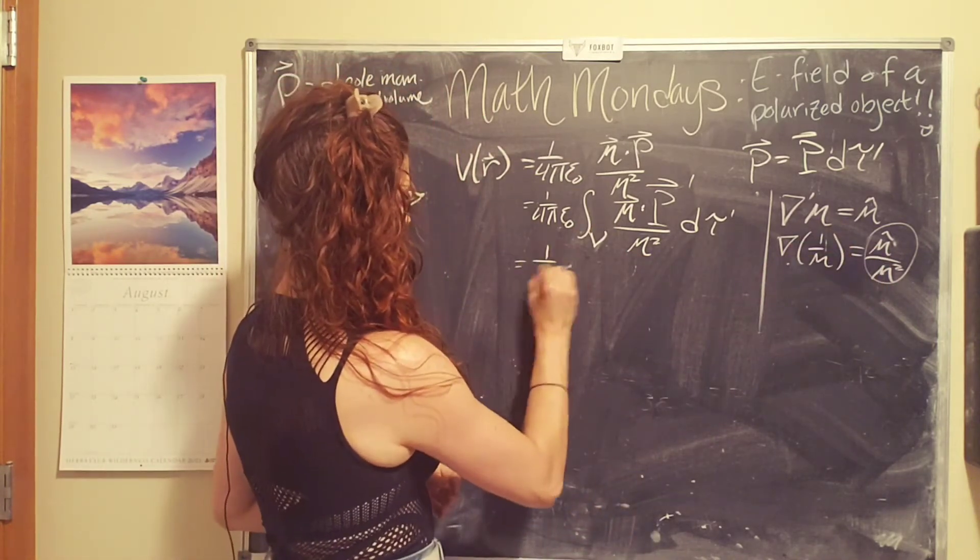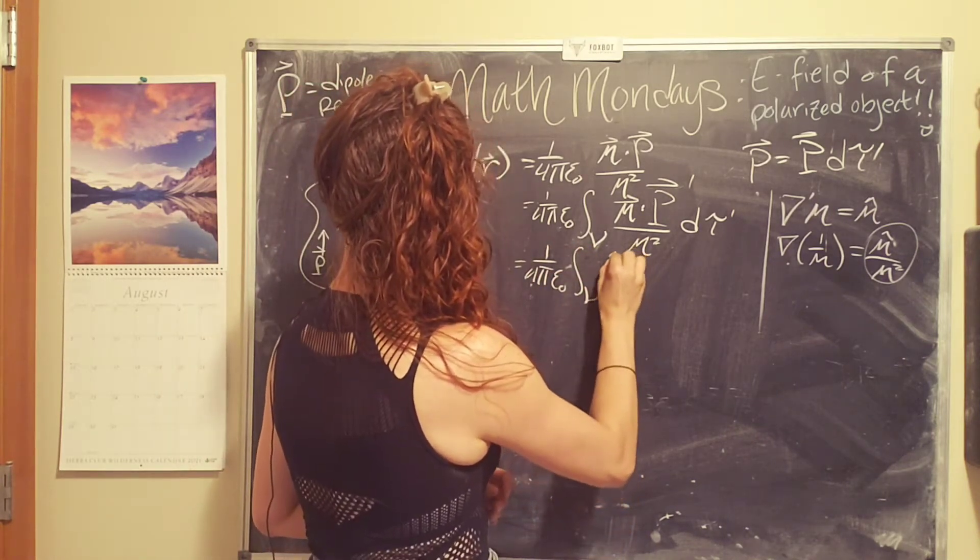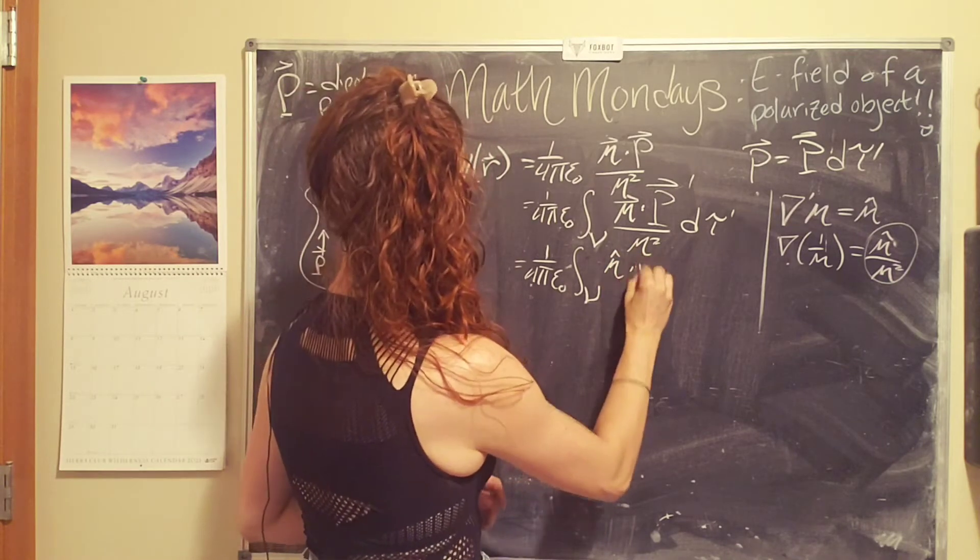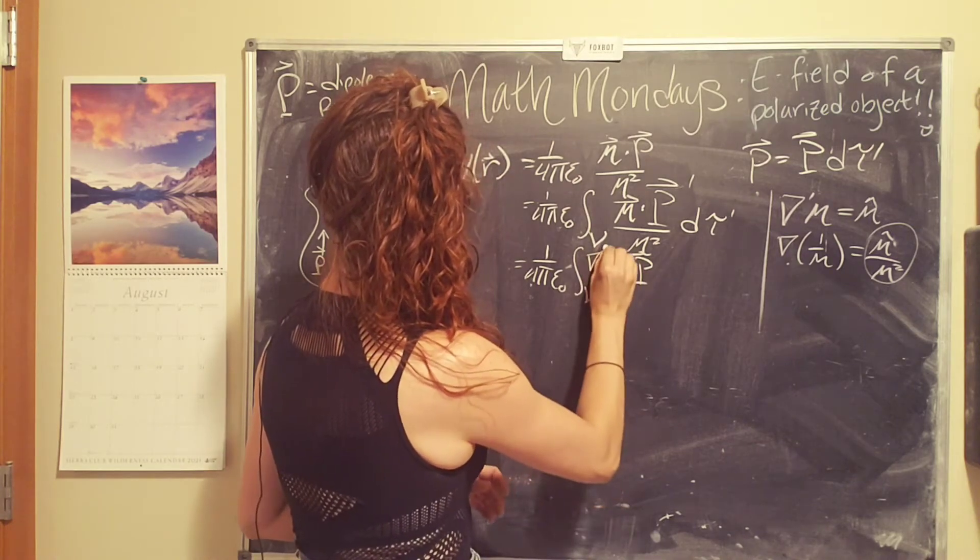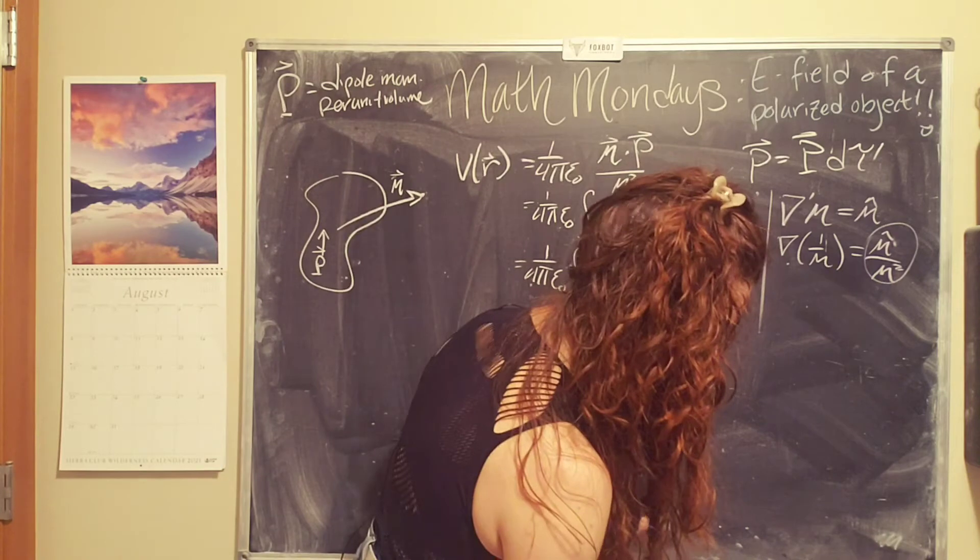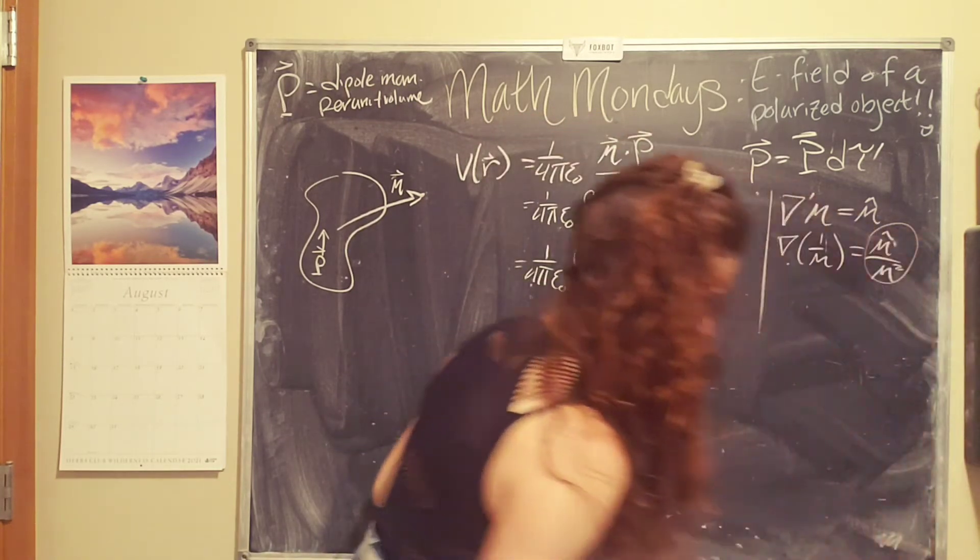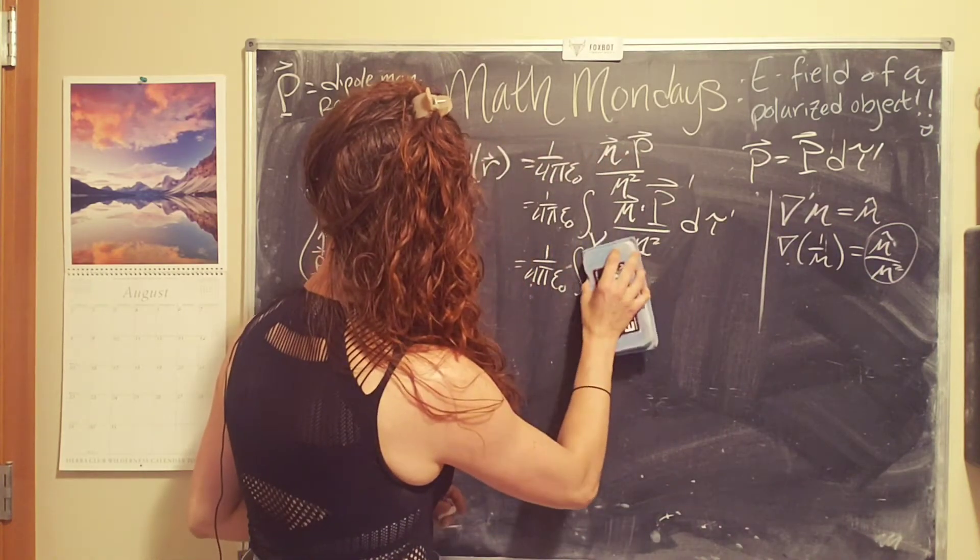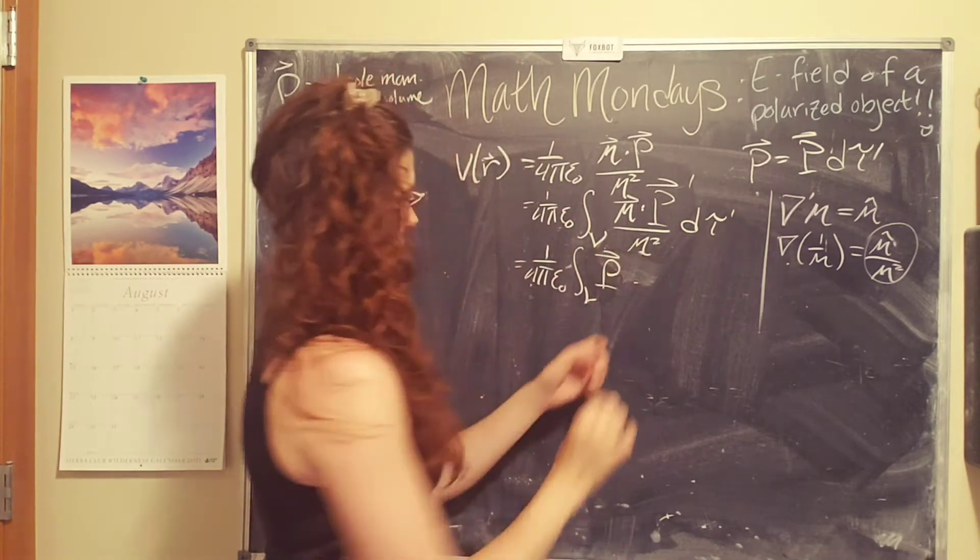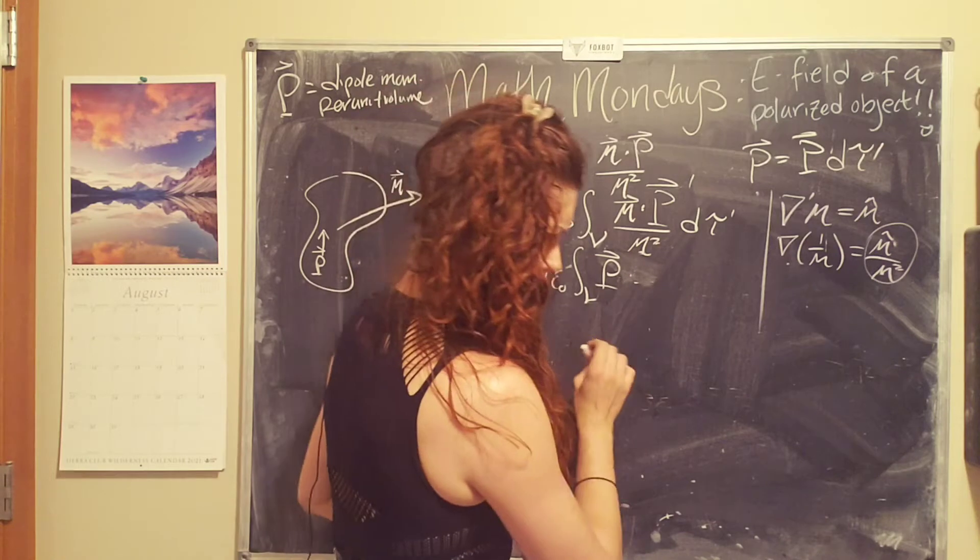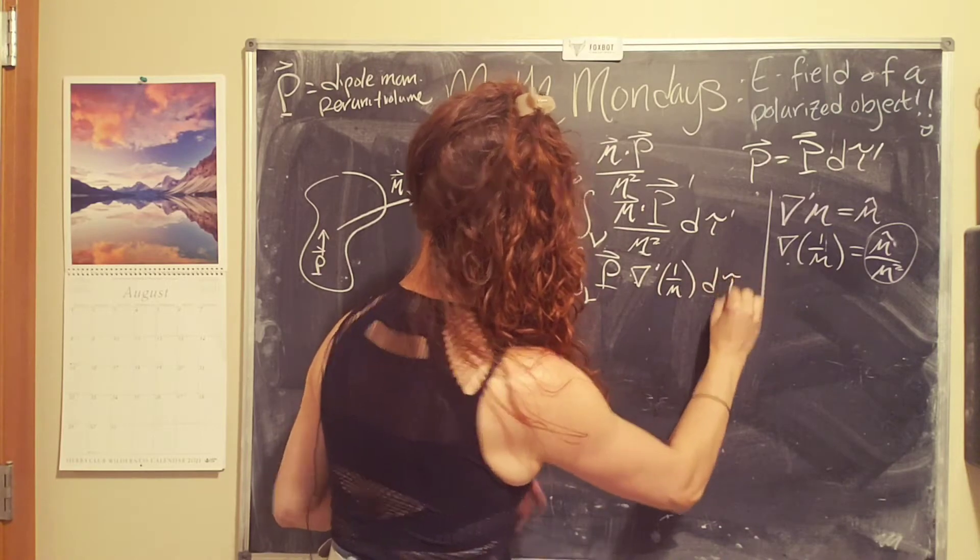In other words, what we get is 1 over 4 pi epsilon naught, we still have our integral, and we end up with script r hat dot the polarization. I think I did it backwards. Okay, so we're going to flip it and reverse it. So p polarization dot del prime times 1 over script r d tau.